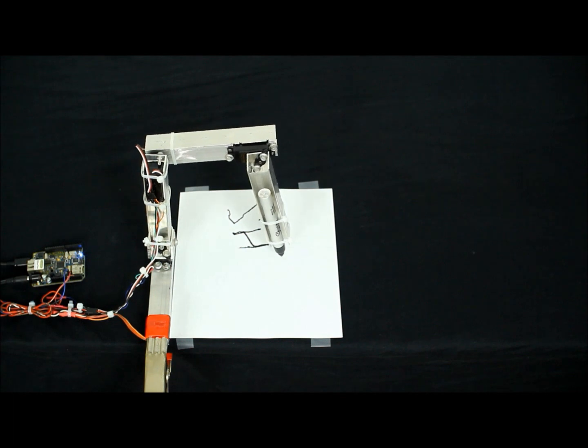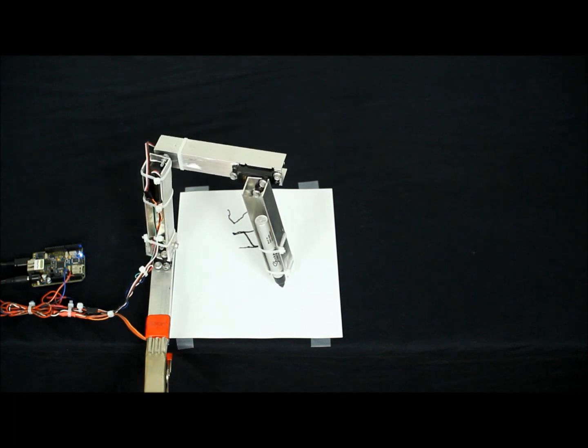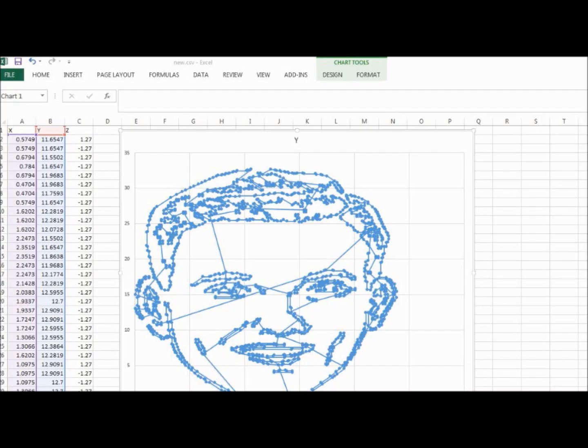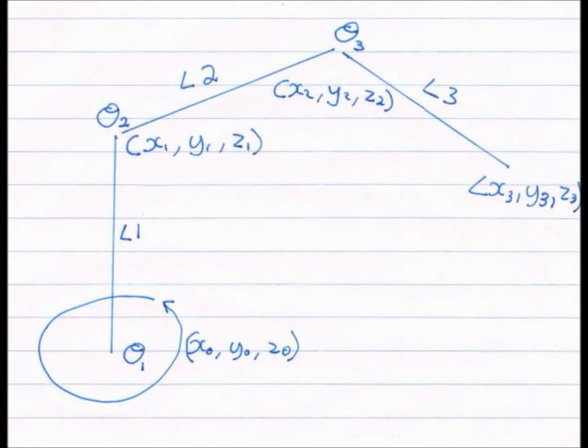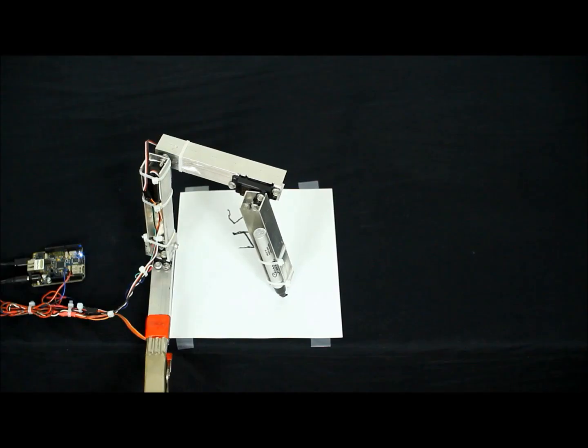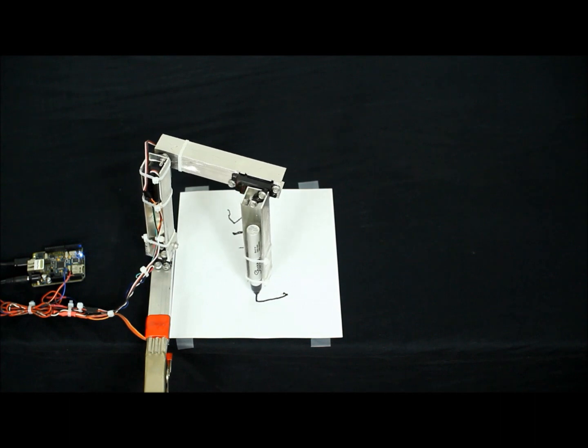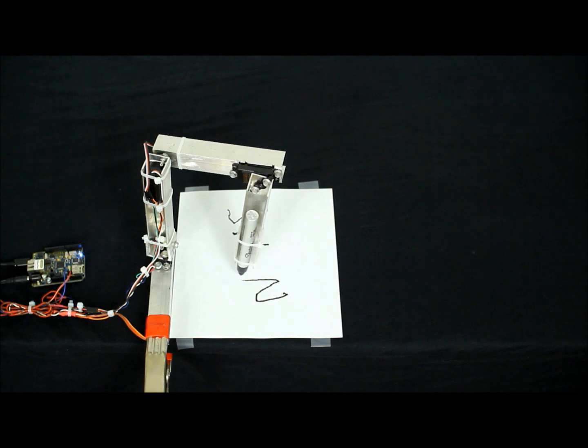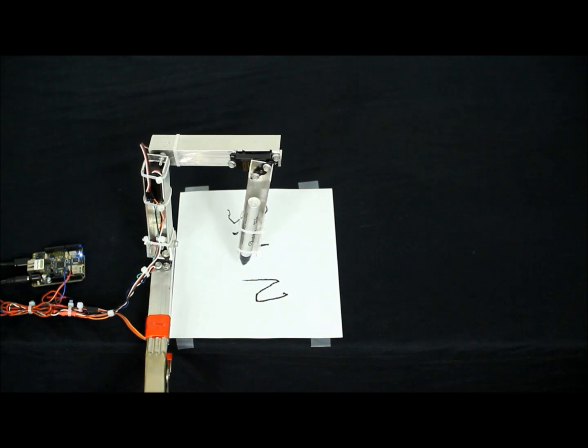This project teaches students about the physical construction of the arm, converting normal pictures into a draw path that the arm can actually understand, as well as some reasonably advanced programming techniques and maths that will convert that image from basically just a picture into first a draw path, and then the angles that the motors on the arm have to turn to, to actually make the pen draw that picture on the paper.